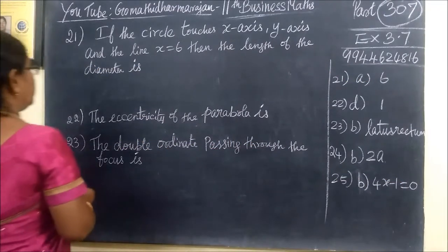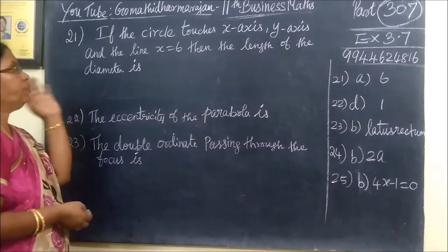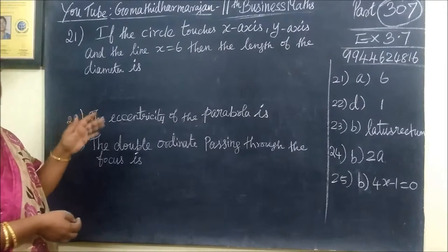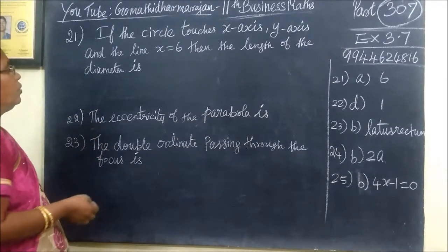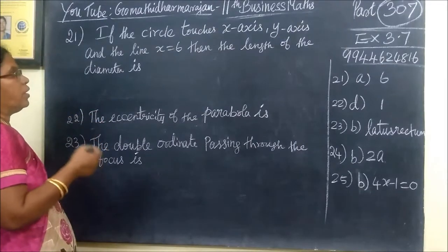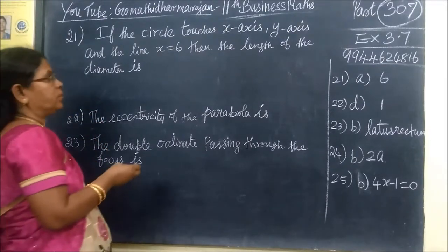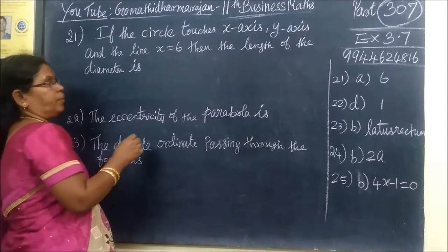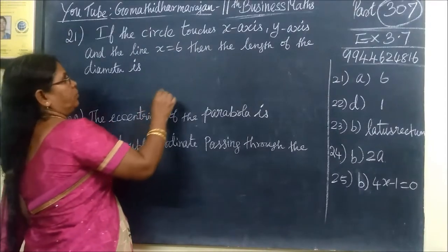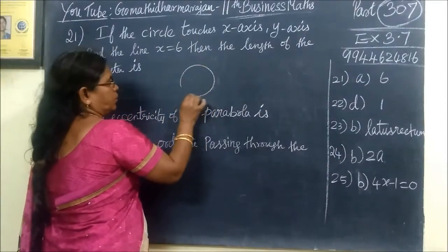Question number 21. If the circle touches the x-axis and the line x equals 6, then the length of the diameter is what we need to find. It is one circle.